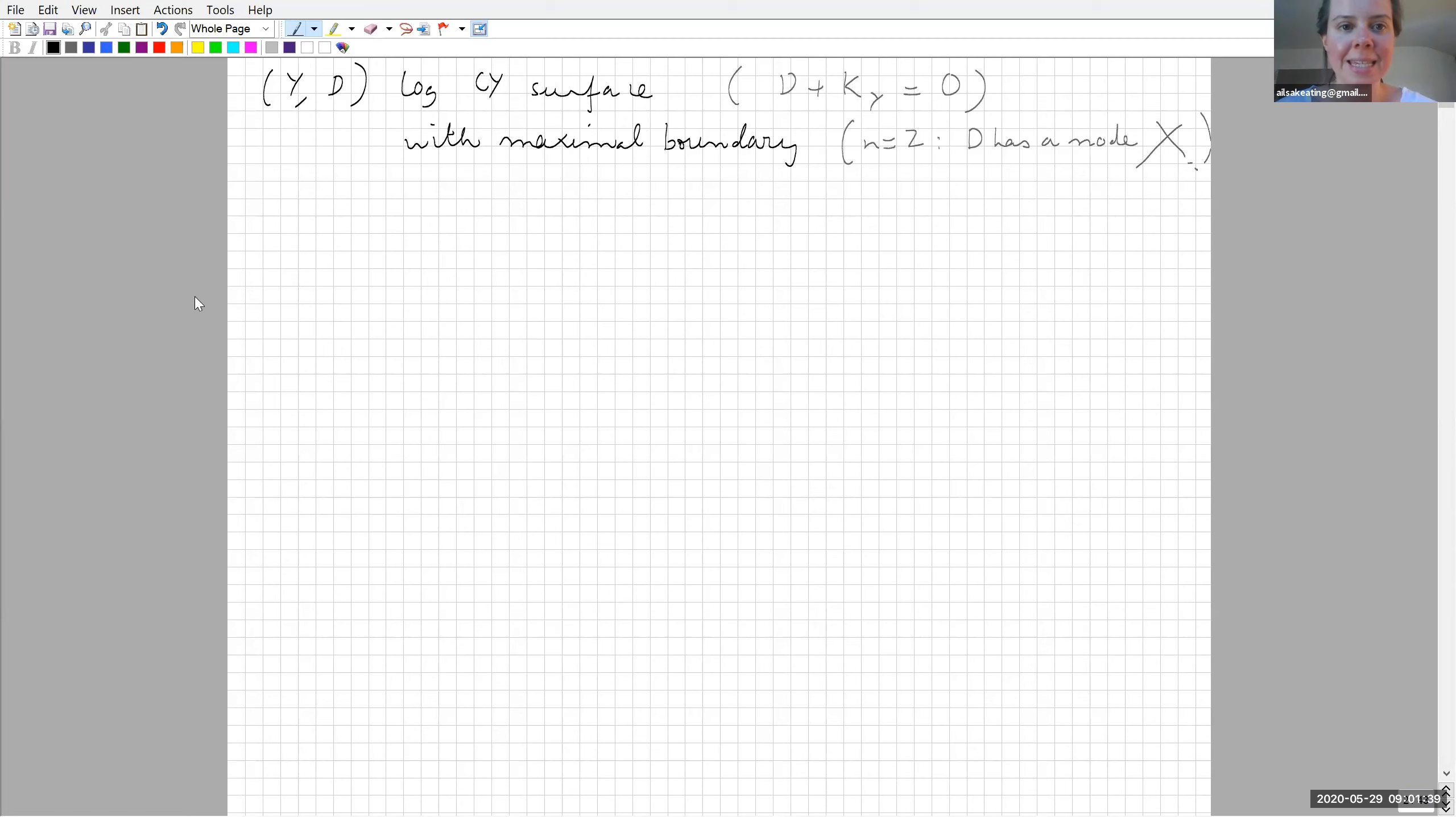What I'm going to tell you about today is homological mirror symmetry for log-Calabi-Yau surfaces. A log-Calabi-Yau surface is a smooth rational projective surface over the complex numbers with an anti-canonical divisor D. There's a technical assumption that D has maximal boundary, which in dimension two means D has a node. In practice, think of a cycle of P¹s.